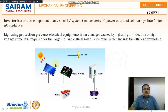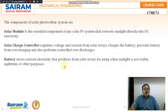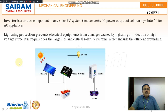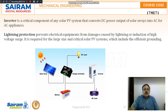To recap, the components of the solar photovoltaic system are: the solar module consisting of the solar panel, the charge controller, and the inverter to convert DC into AC. The DC power output is connected to AC appliances.